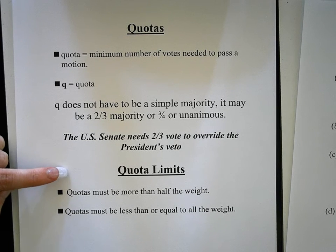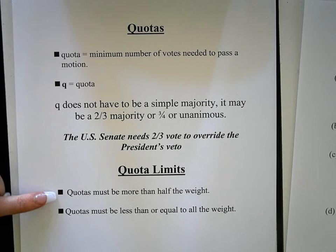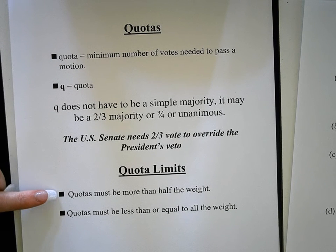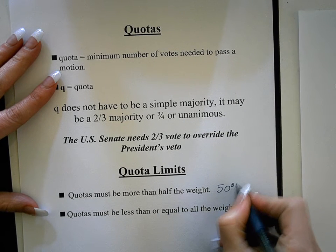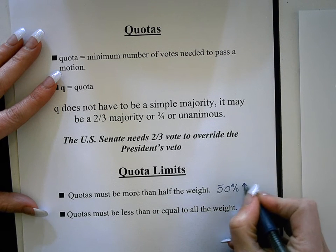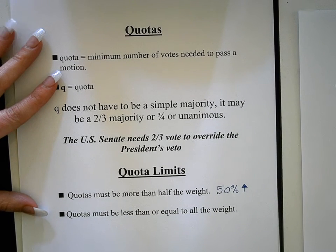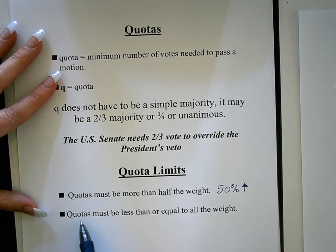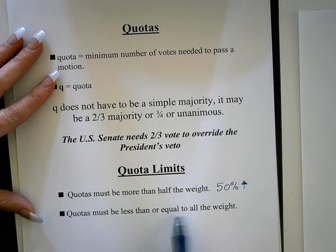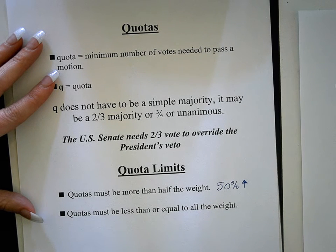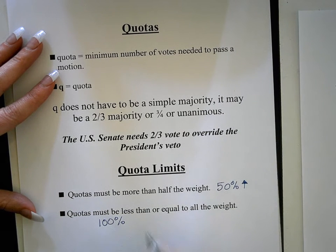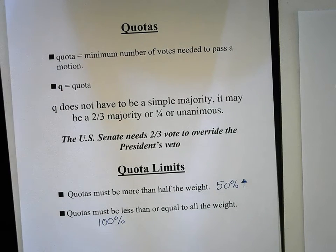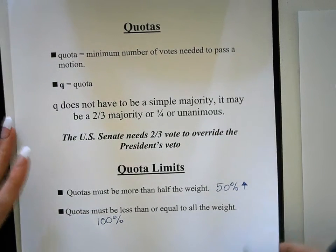There are some quota limits. The first is that quotas must be more than half the total weight — they have to be over 50%; they cannot be exactly 50%. The other limit is that quotas must be less than or equal to all the weight, meaning they can be up to 100% but must stay above 50%.